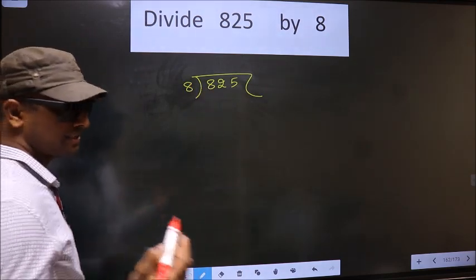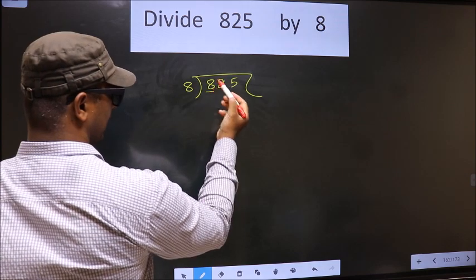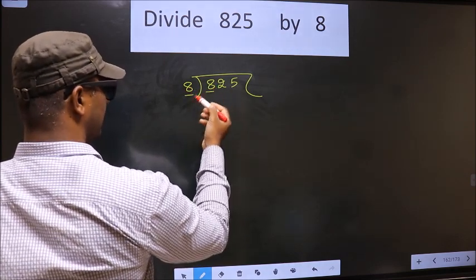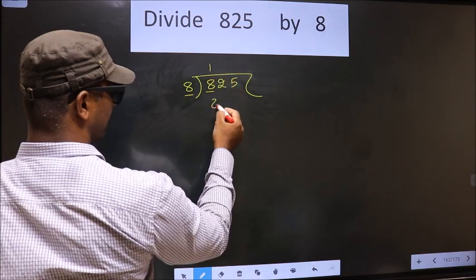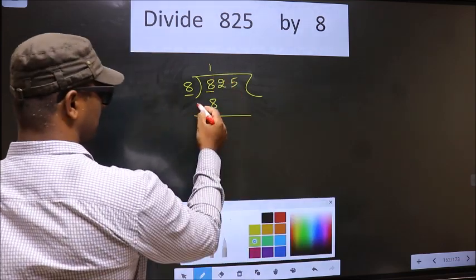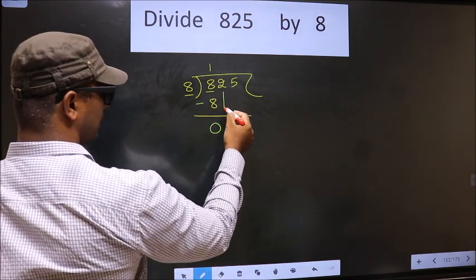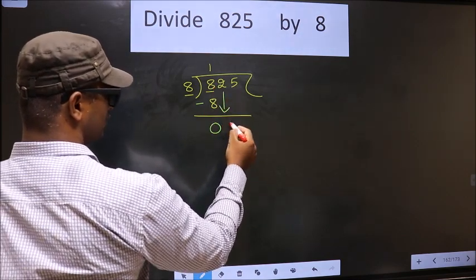Okay, next. Here we have 8. Here also 8. When do we get 8 in 8 table? 8 once, 8. Now you subtract. 8 minus 8, 0. Now you bring down the beside number. So 2 down.